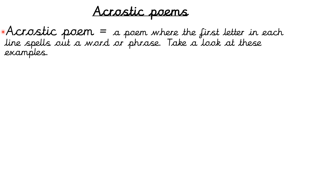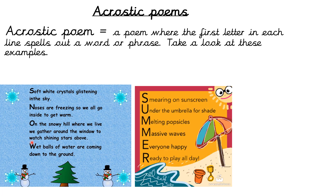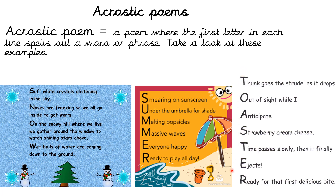An acrostic poem is a poem where the first letter in each line spells out a word or phrase. Take a look at these examples. Here I have got the word S-N-O — each letter at the beginning of each line spells out a word, so this one is 'snow' and the poem describes the word snow. Usually the first letter is capitalised and much bigger than the rest of the poem. If you want to pause the video and have a read through those poems to get an idea of what acrostic poems sound like.